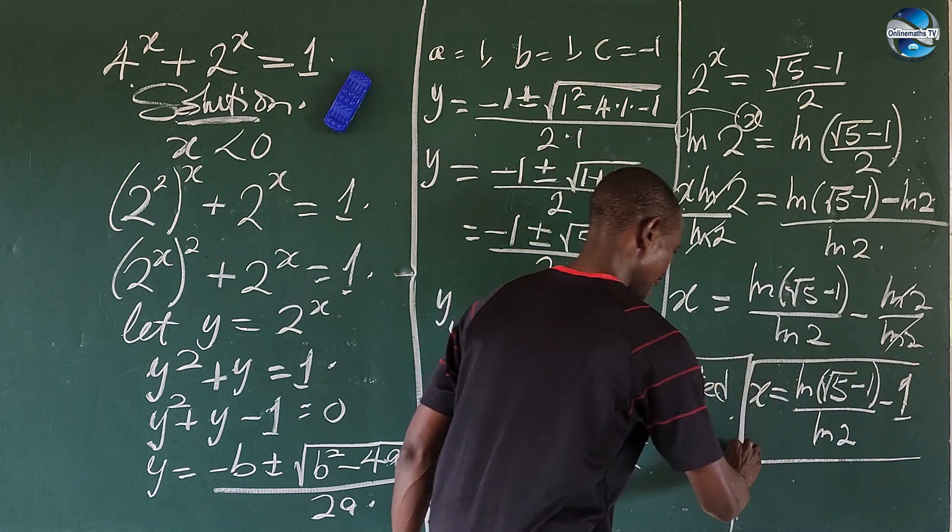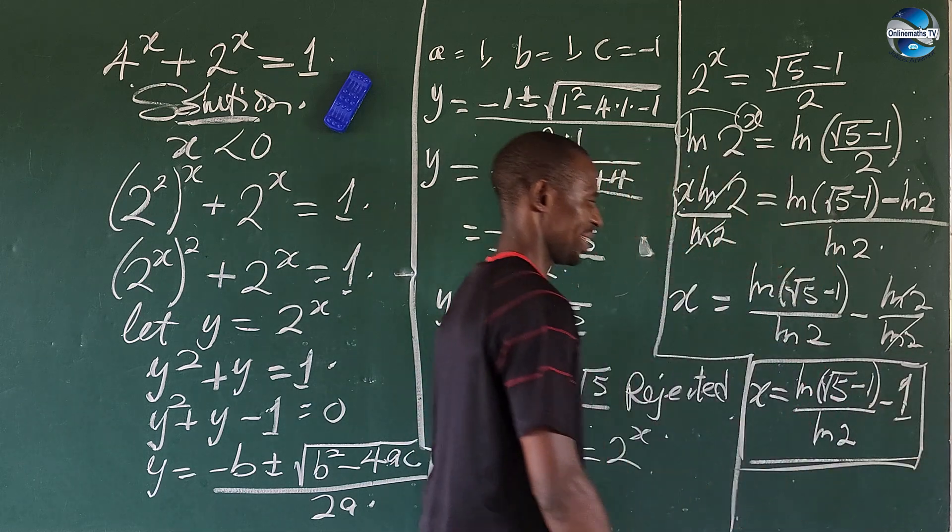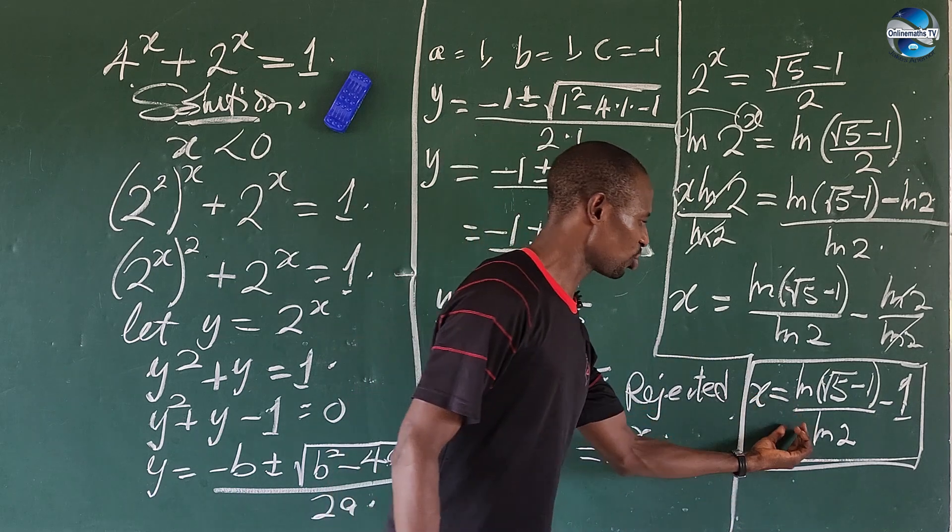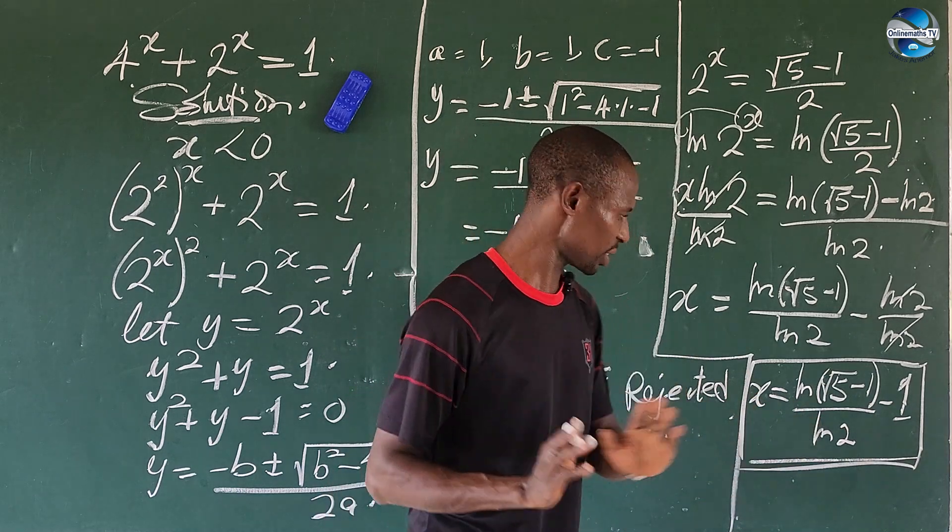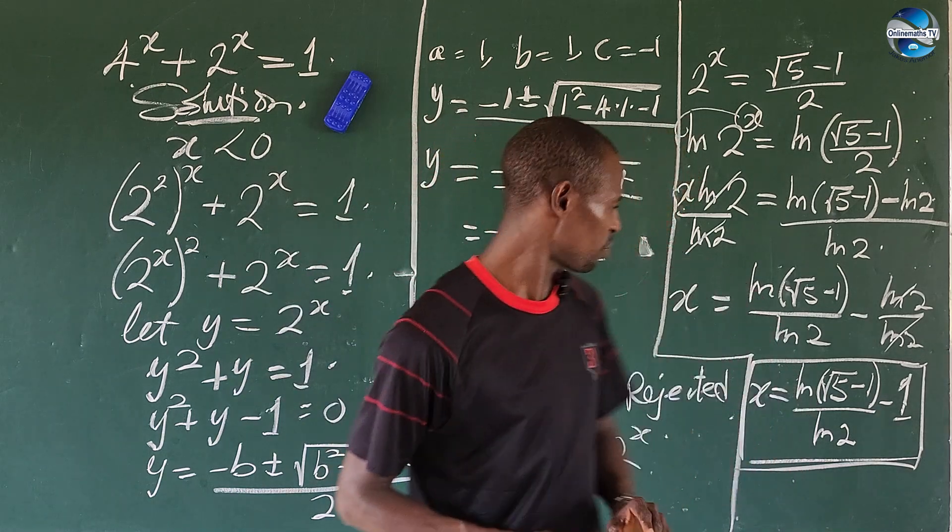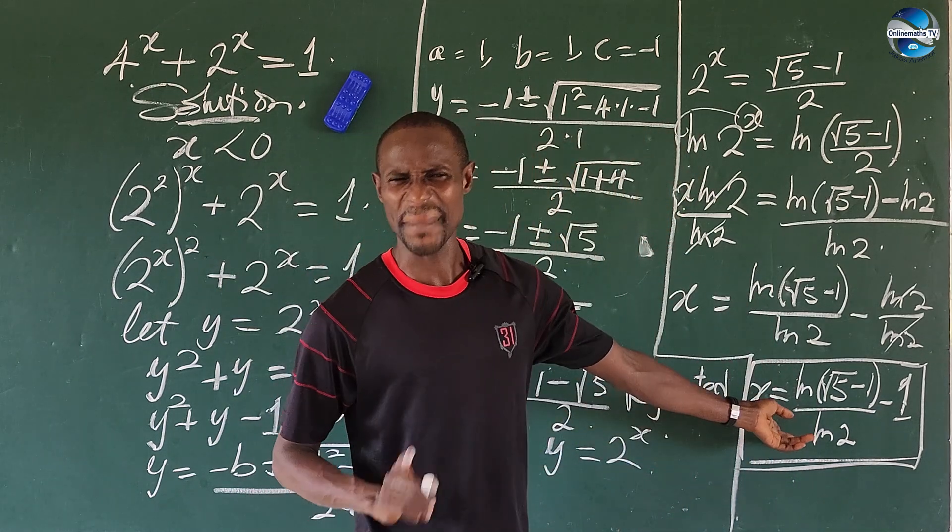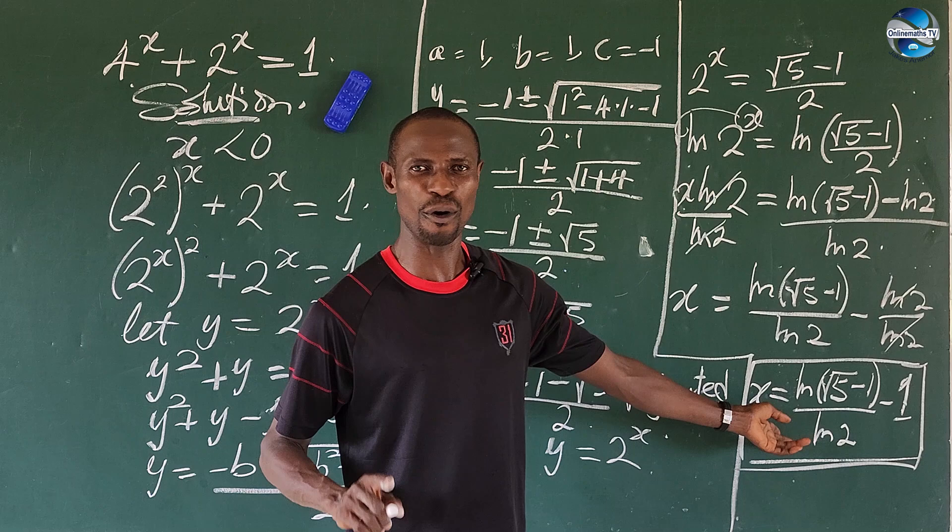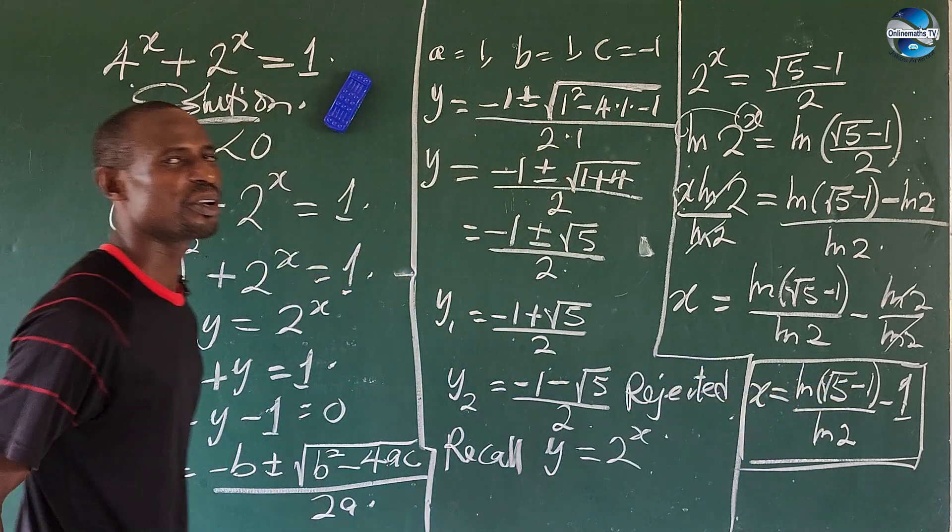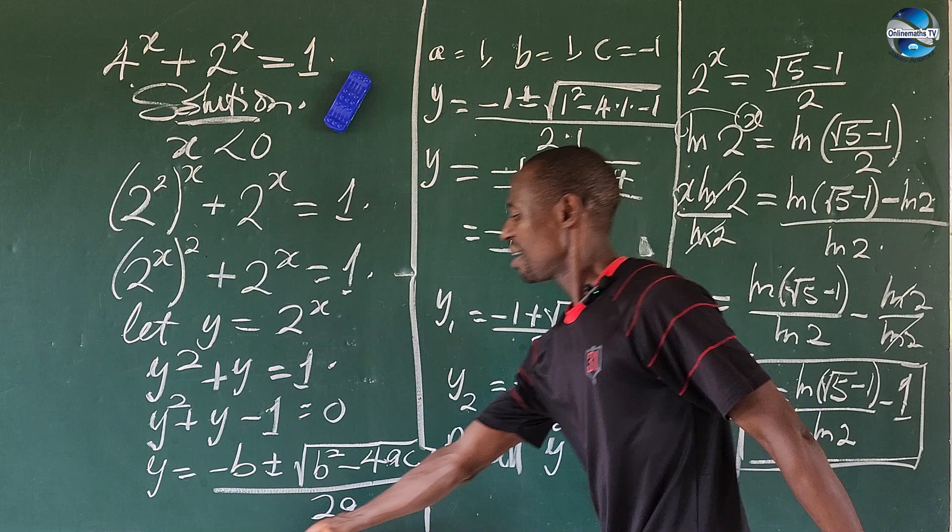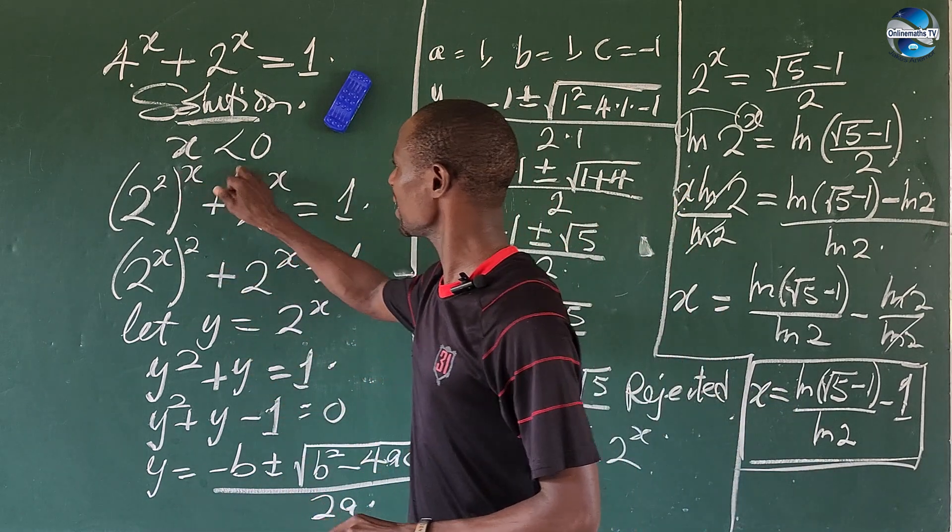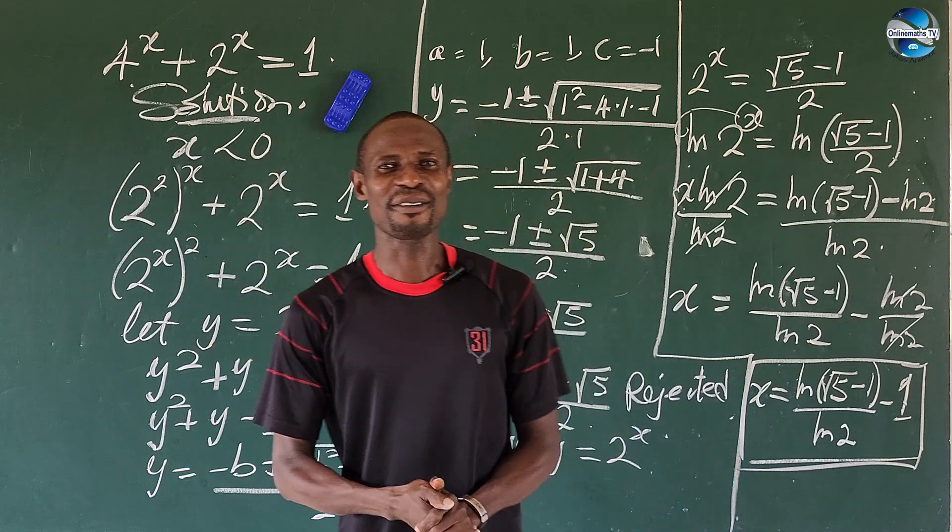So this gives the value of x. Now I've gone ahead to solve this to get the numerical value. And if you input the value into this, it will give you the correct answer. In other words, the numerical value for x is minus 0.6942. So if you input that value in here, you're going to have it to be approximately 1. And that's what we said the other time that x is less than 0.